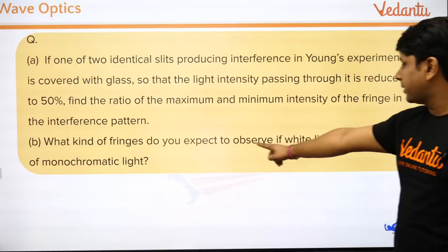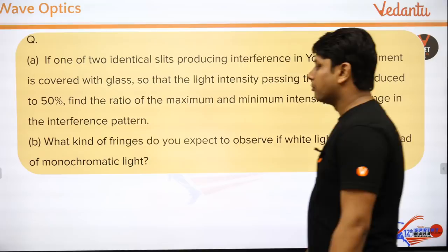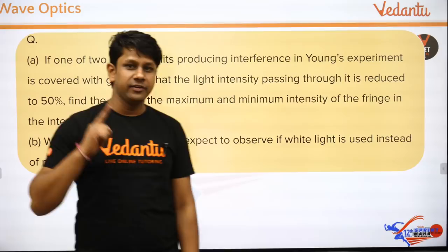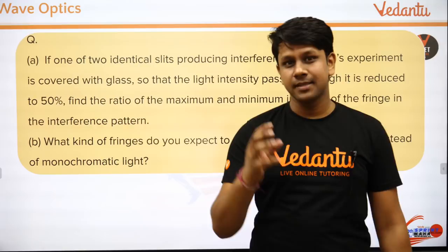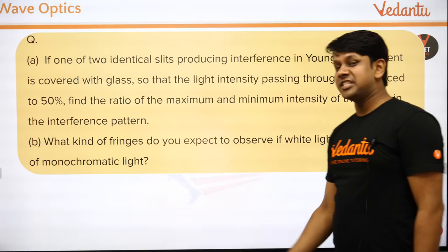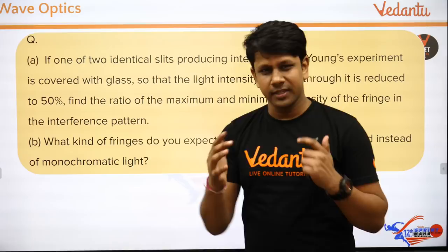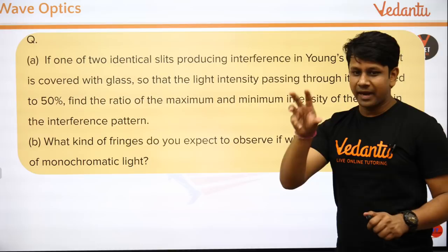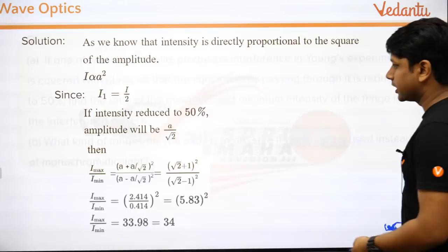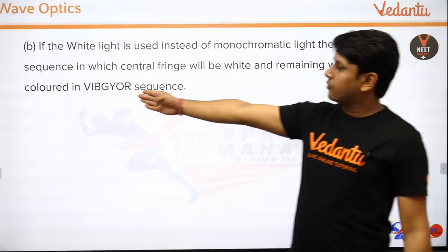The next part asks: what fringes do you expect if white light is used instead of monochromatic light? Monochromatic light has a single wavelength. White light contains all wavelengths (VIBGYOR). So in the fringe pattern, the central maxima is bright white, but on either side you see the VIBGYOR color sequence. The fringe pattern shows all colors of the spectrum.